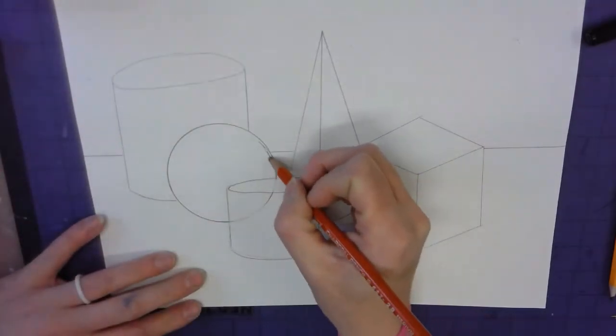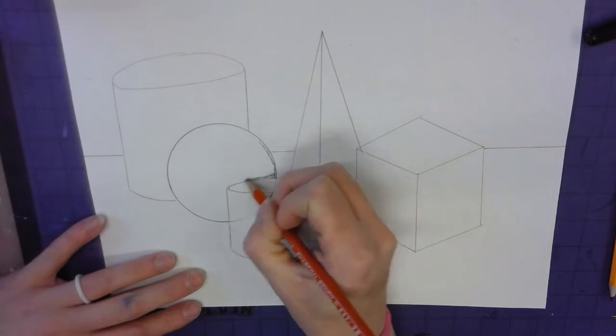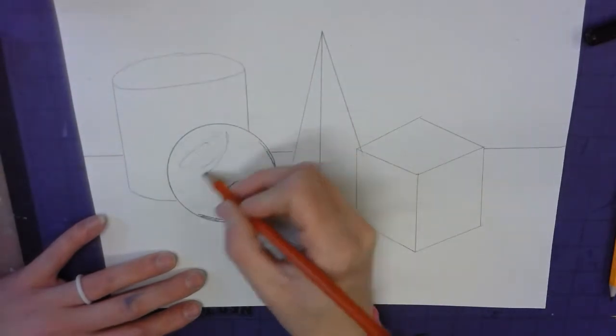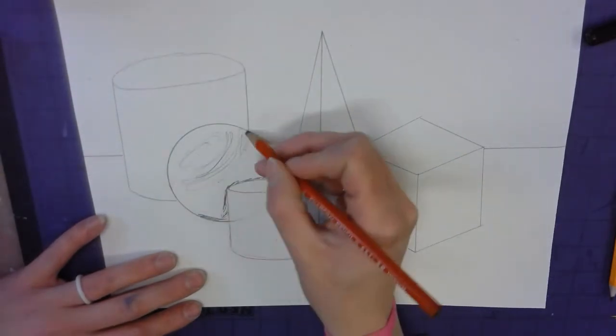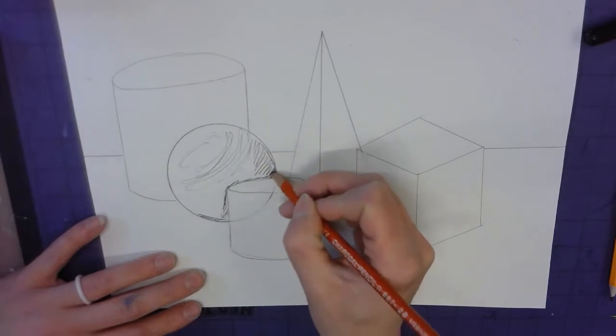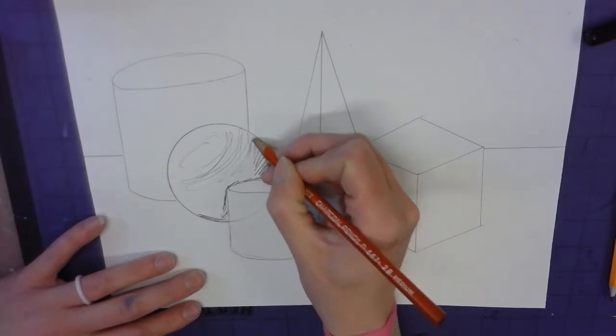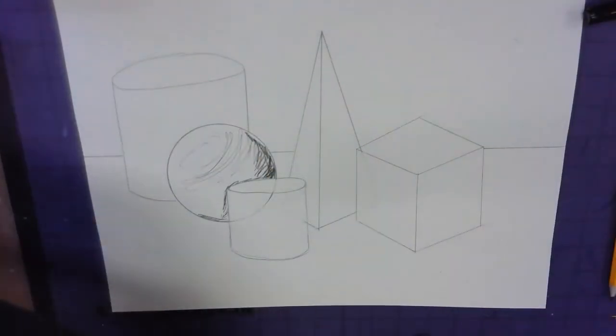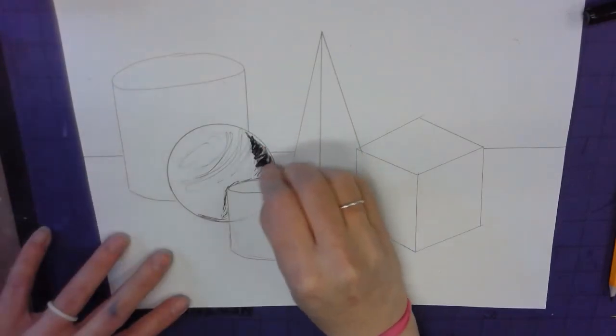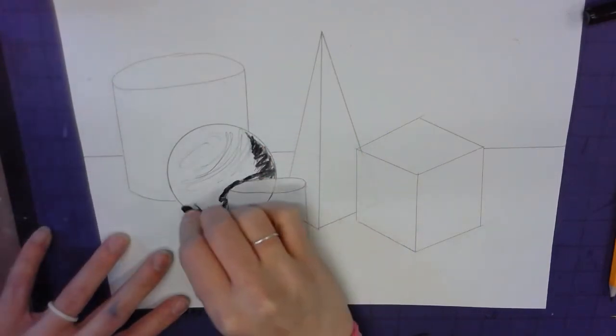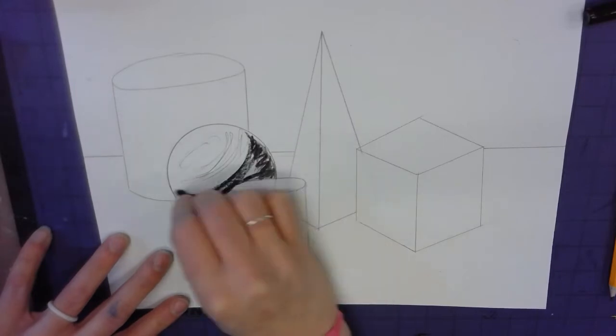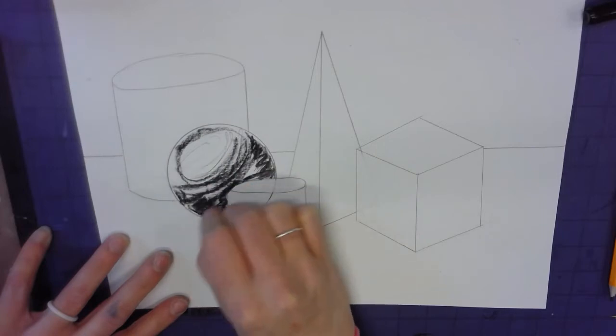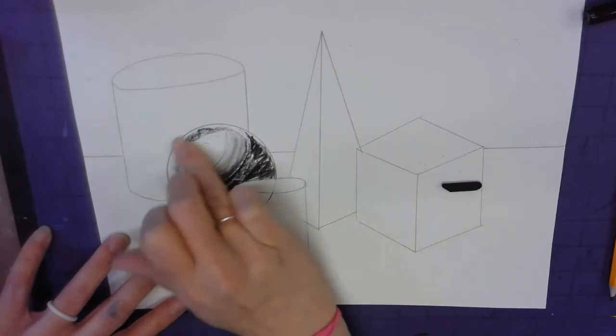So if I start with cylinder, or this cube, fade in the left side pretty dark. Then you can also use the loose charcoal. I want to go in that sphere form. Blend.